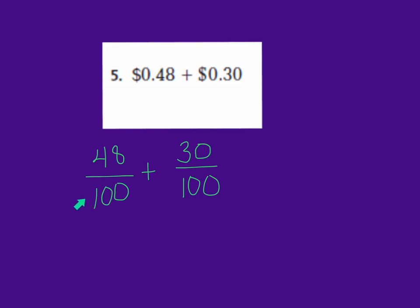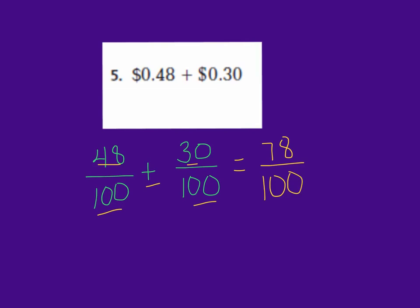As you can see, 48 hundredths plus 30 hundredths have the same denominator — hundredths — which means all we need to do is add the numerators. So 48 plus 30 gives us 78, and our denominator stays 100. So we have 78 hundredths as our answer. But when we first started, our numbers were in money form, so we need to change 78 hundredths back into money. 78 hundredths is the same as 78 cents.